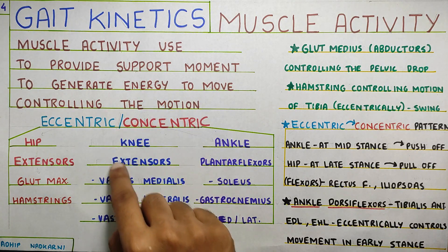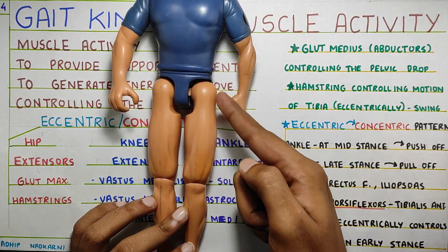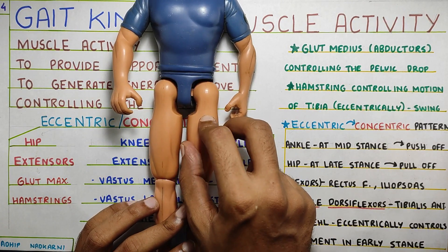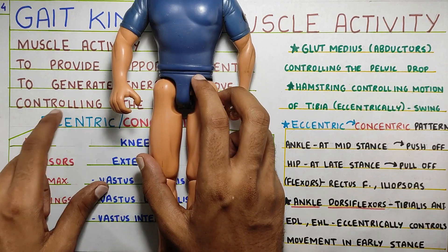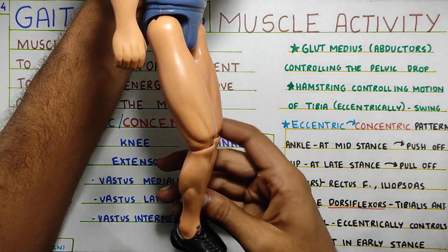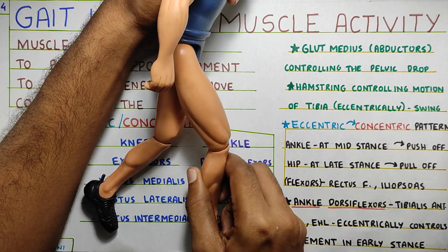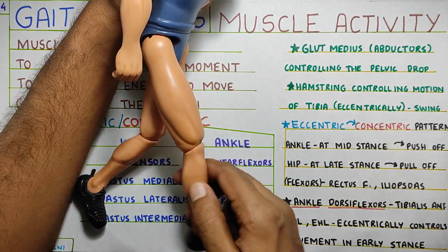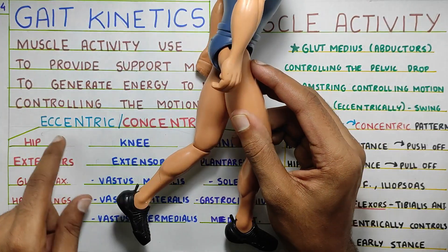Now moving to the knee joint — knee extensors. What are the extensors at the knee joint? Vastus medialis, vastus lateralis, and vastus intermedius — these are the three that form the quadriceps along with rectus femoris. What is the eccentric function of knee extensors? During mid-stance, the knee goes from full extension to about 20 degrees of flexion. This knee flexion will lengthen the quadriceps, causing eccentric activity of the knee extensors. So quadriceps will be working eccentrically in the mid-stance.